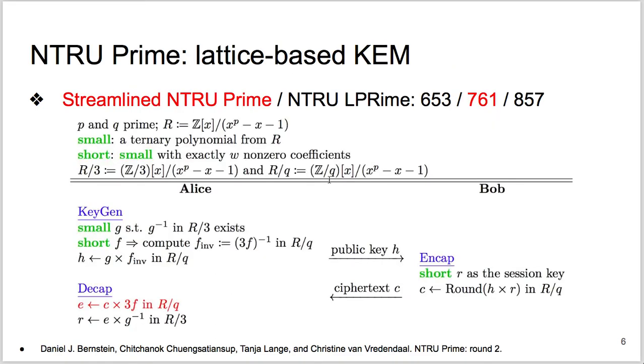Here, we target NTRU Prime, the lattice-based KEM. It contains two KEM algorithms, Streamlined NTRU Prime and NTRU LPrime. Each has three parameter sets, characterized by the polynomials inside, 653, 761, and 857 coefficients, respectively.